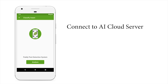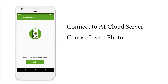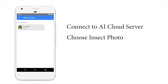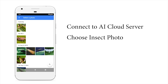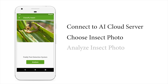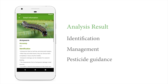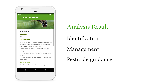To analyze an insect, you need to choose your insect photo. Take a photo or choose from your gallery. Submit your insect photo and the application will send it to the AI cloud server to analyze the insect. The analysis result will then appear on your screen.